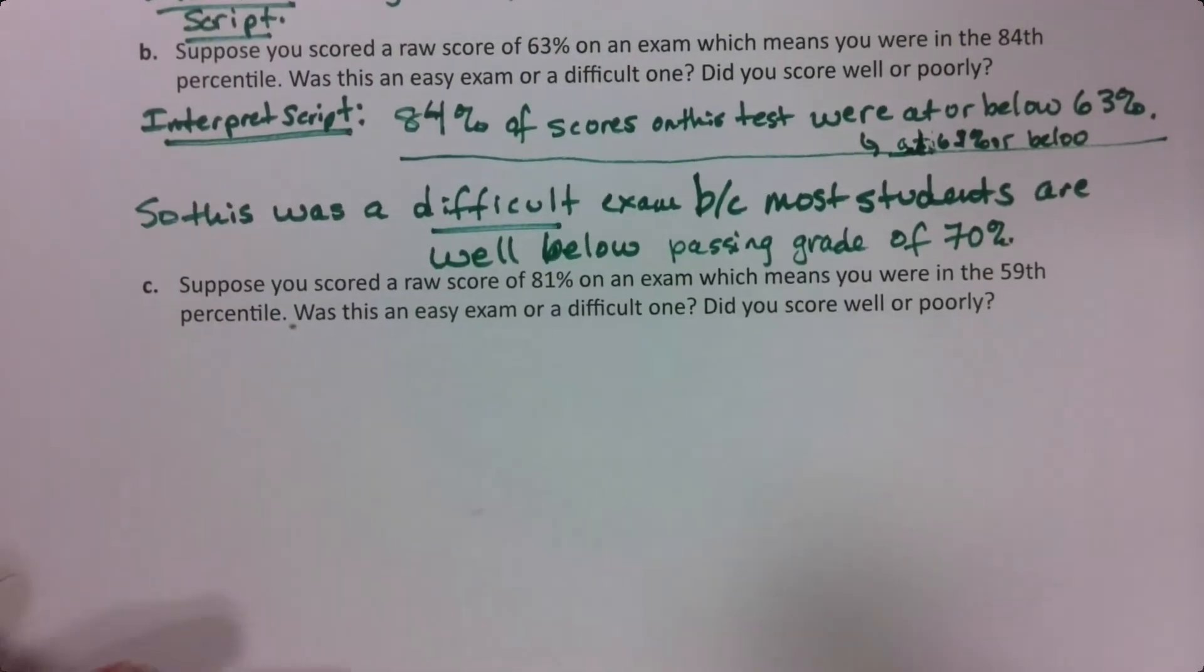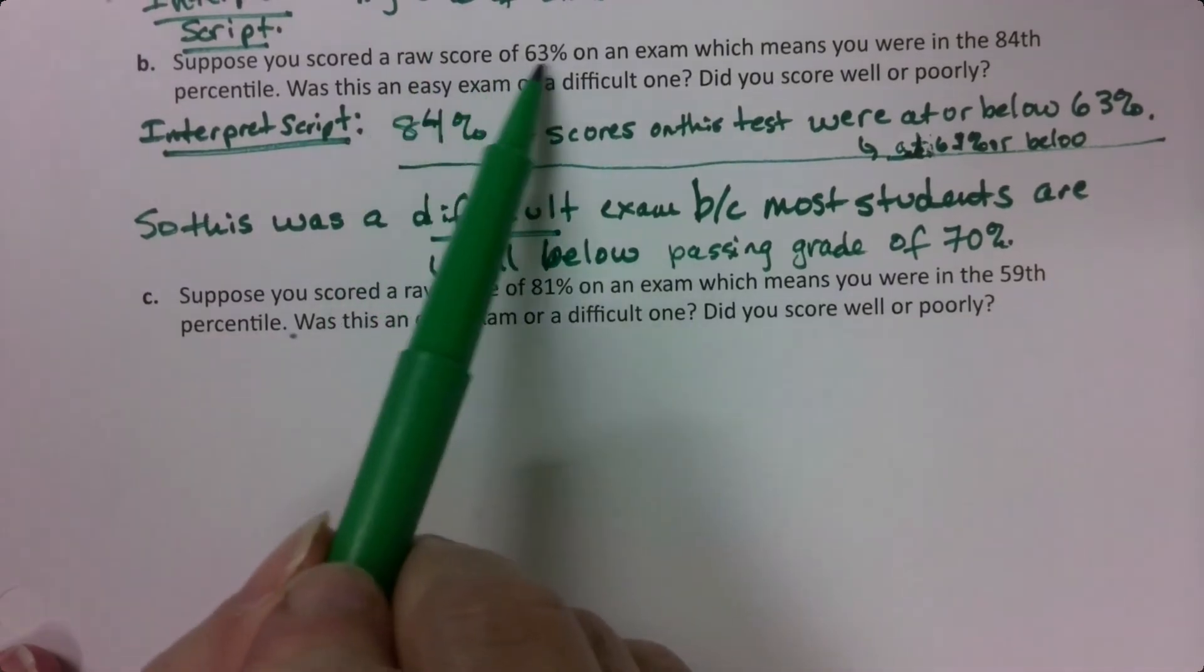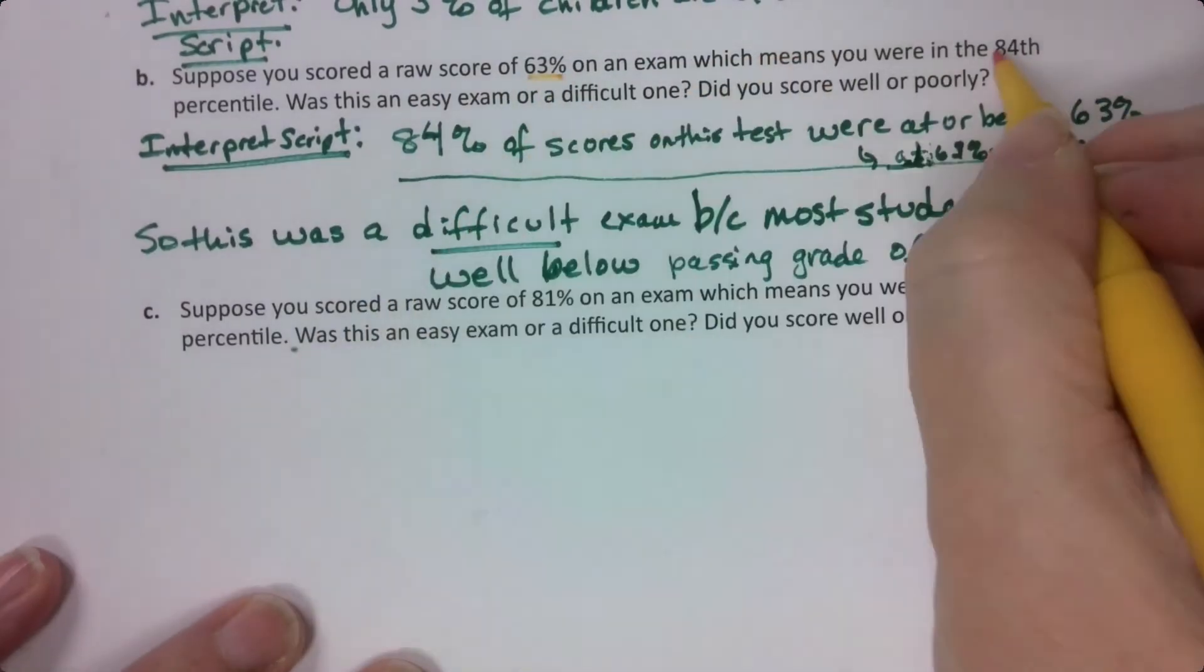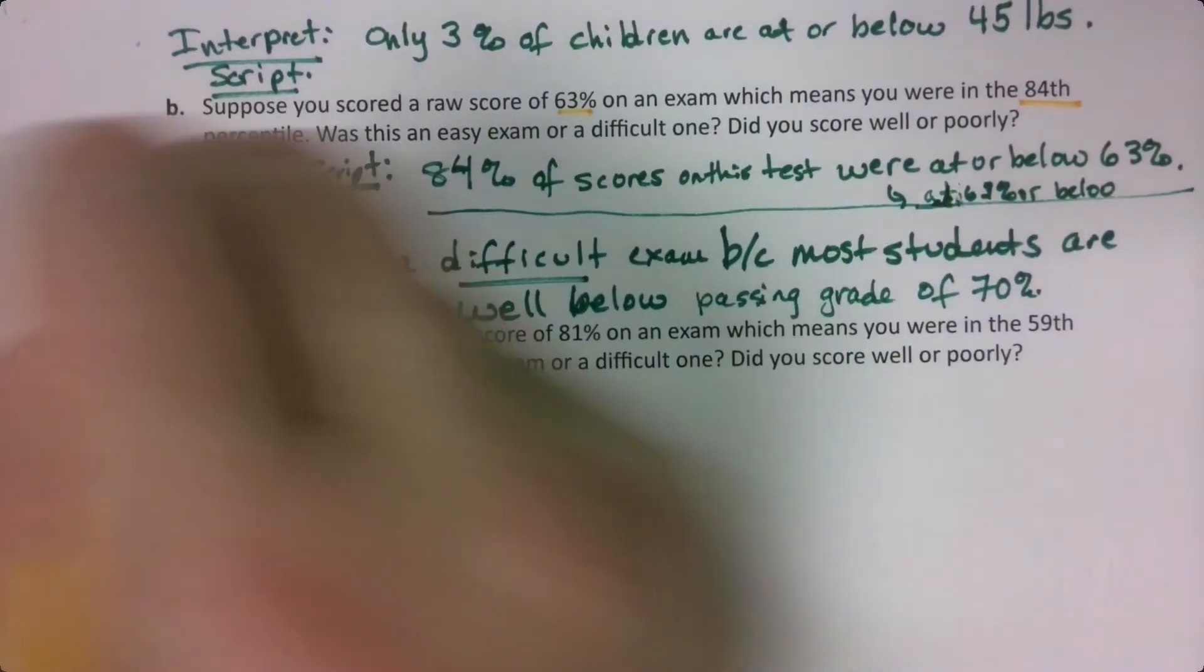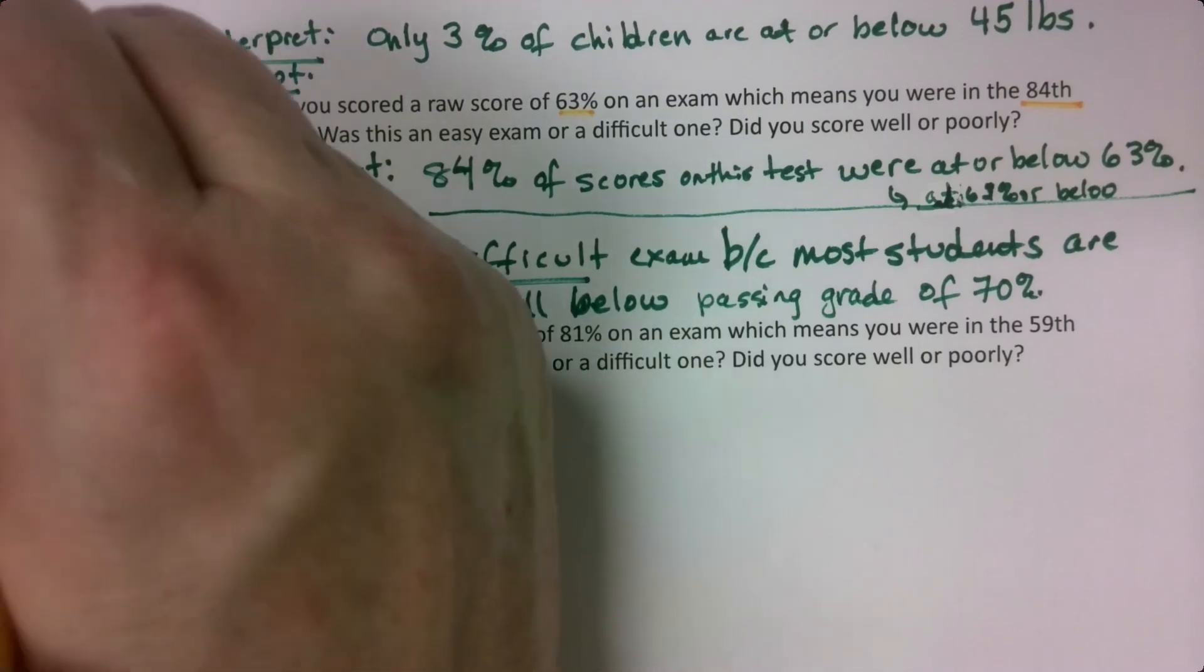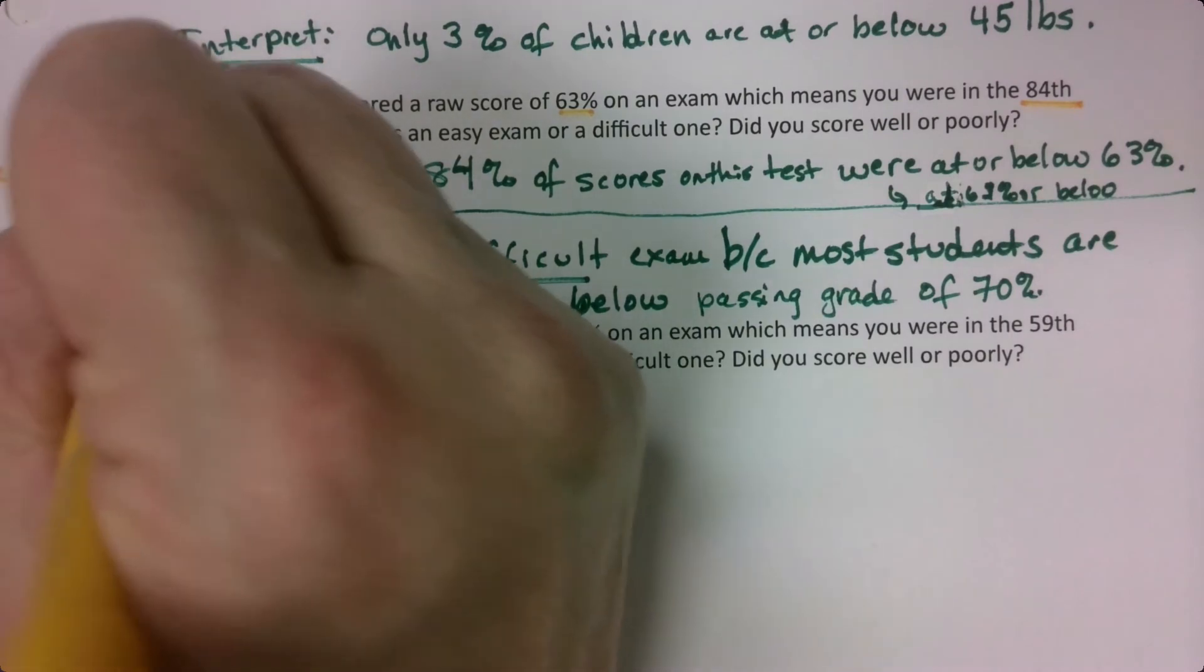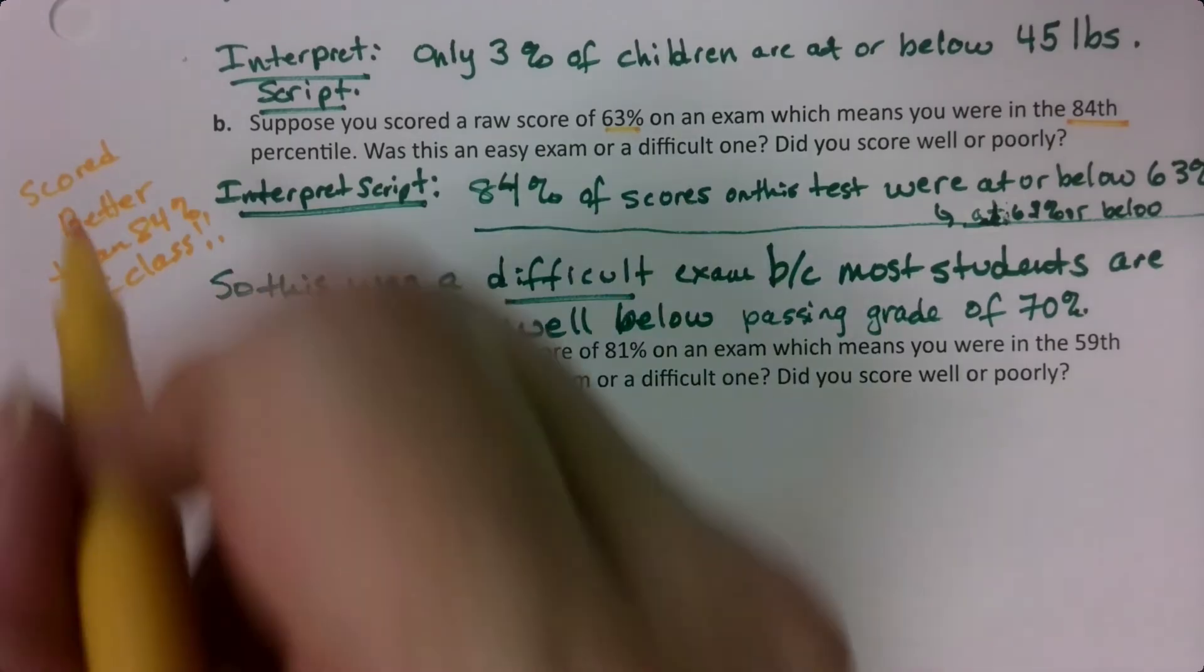Now suppose you scored a raw score of 81%. So you're feeling good. You're like, hey, 63% bad, but then you realize you did better than 84% of the students. Matter of fact, let me make a note of that. So you did a bad score, you think, but you're better than 84% of the students. So you scored better than 84% of the class. So now you're not feeling so bad. You did better than 84% of the class. That's another way to interpret this, by the way.